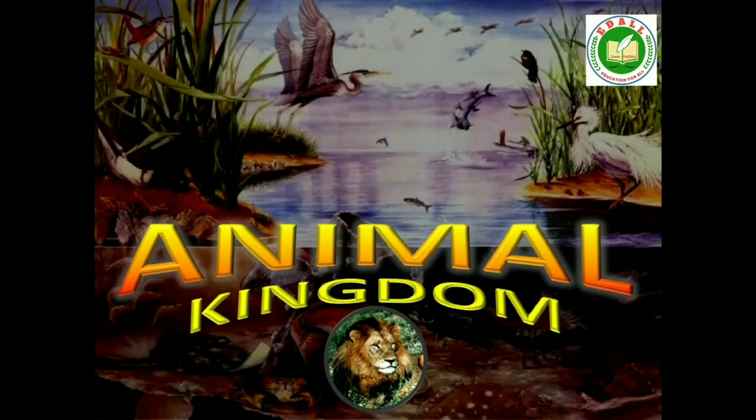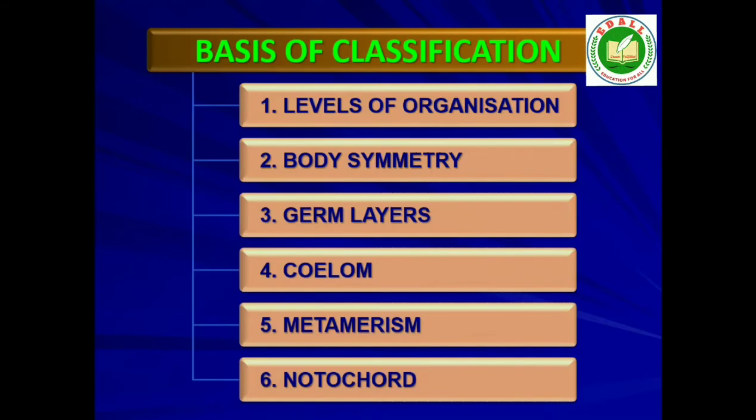4.1 Basis of Classification. In spite of differences in structure and form of different animals, there are fundamental features common to various individuals in relation to the arrangement of cells, body symmetry, nature of coelom, patterns of digestive, circulatory or reproductive systems. These features are used as the basis of animal classification.